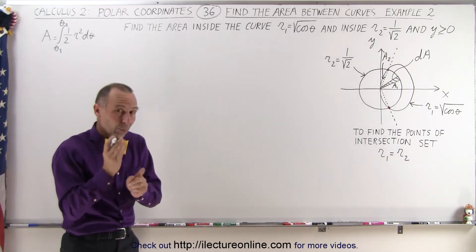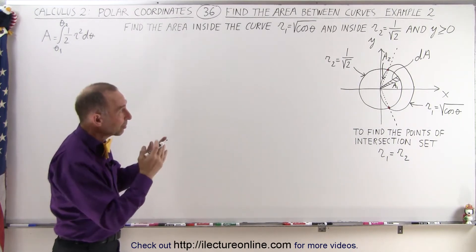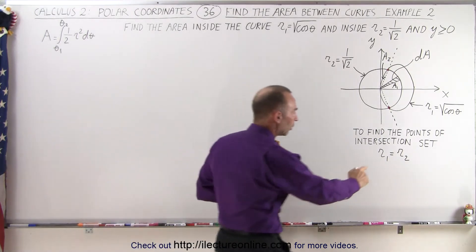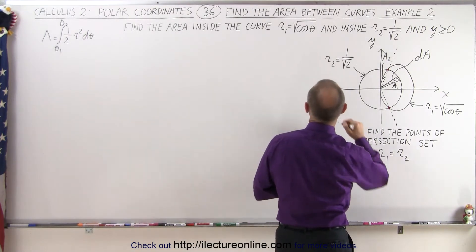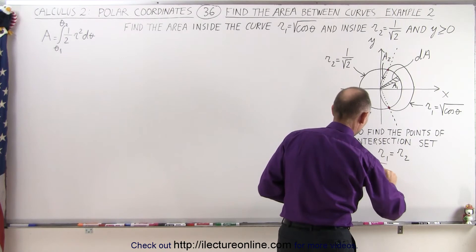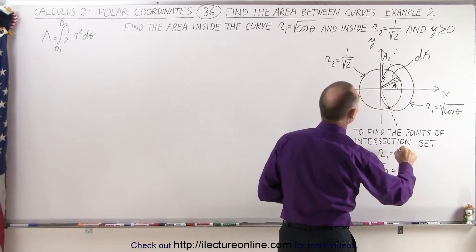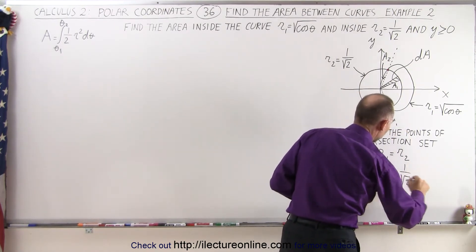Also, we need to find out where that point of intersection is by solving the two functions simultaneously. So we're going to set R1 equal to R2, R1 being the square root of the cosine of theta, and R2 being equal to 1 over the square root of 2.